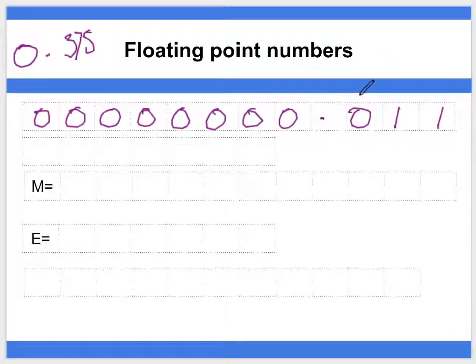So thinking about this, what we want to do with normalisation is we want to move the decimal place to a normalised position. Now this isn't normalised because it begins 0.0, and any normalised number will begin 0.1 if it's positive.